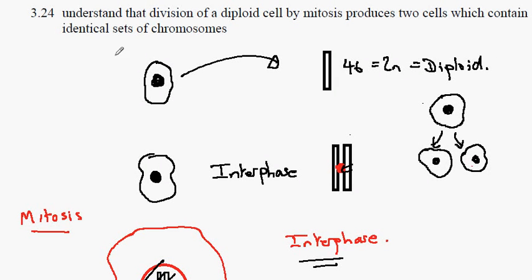IGCSE Biology, Syllabus Statement 3.2.4. The topic is mitosis. This is 3.2.4C, in which we'll be looking at the stages of mitosis.